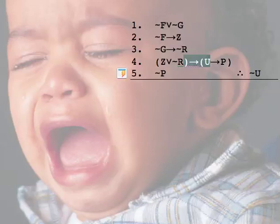For instance, look here. Here's a conditional statement, right? If we had this by itself, you probably know pretty quickly now how you could get not U. Get not P, modus tollens, not U, kaboom.